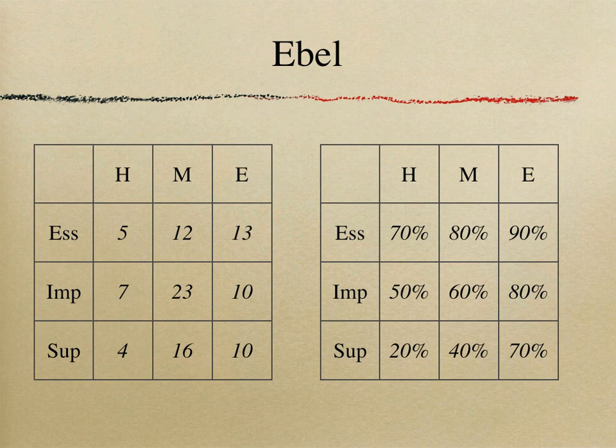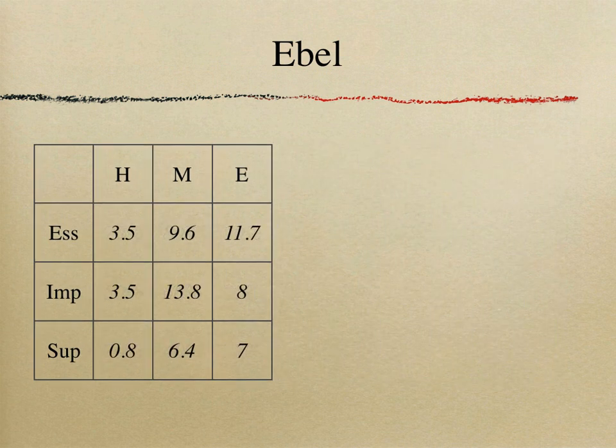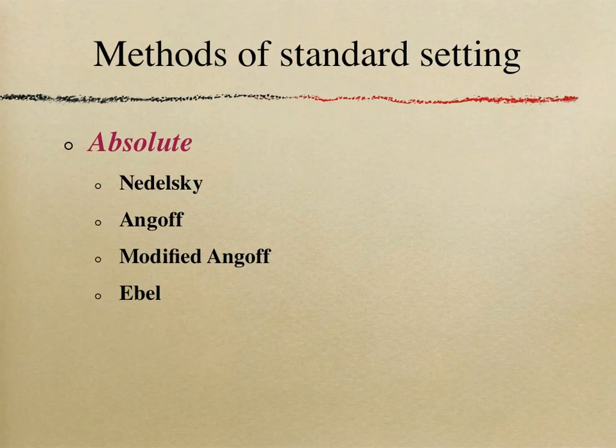As an example — and not far from reality — fifth-year borderline candidates might have a 70% likelihood of answering hard-and-essential items correctly, while hard-and-supplementary items might be only 20% or even zero. Once the panel agrees on the matrix percentages, you multiply the number of items in each cell by the corresponding percentage to get the expected marks. Summing all these values gives the final pass mark — in this 100-item MCQ/SBA paper, that came out to 63%.